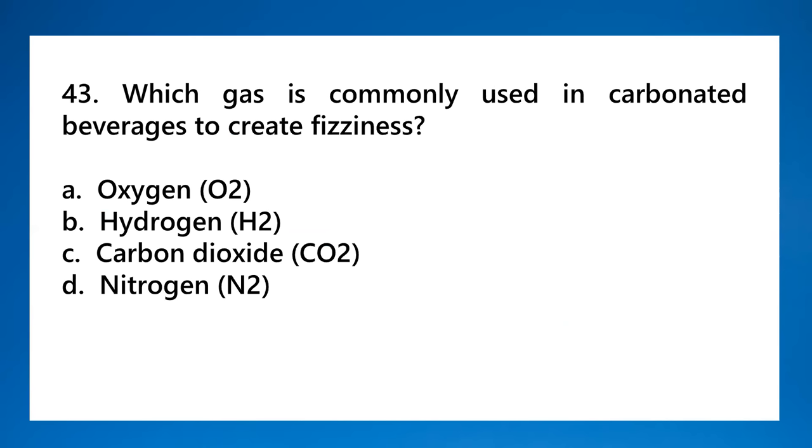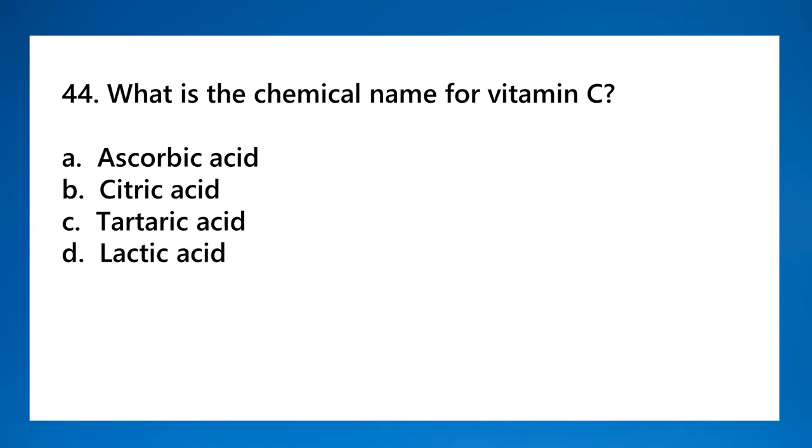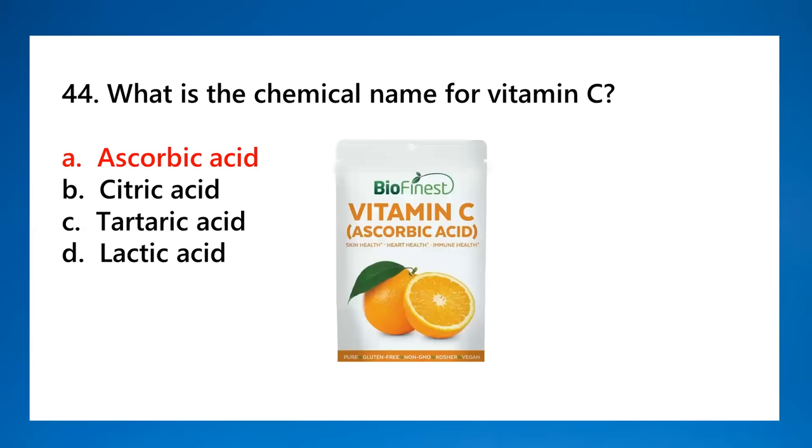You should be familiar with the periodic table. Noble gases include helium, neon, argon. Neon is a noble gas. Noble gases are inert gases, they're not reactive, not highly reactive. Highly reactive elements are group 1 and group 2. Number forty-three: which gas is commonly used in carbonated beverages to create fizziness? That is carbon dioxide. When we open carbonated beverages, the fizzing sound is carbon dioxide escaping. Number forty-four: what is the chemical name for vitamin C? That's ascorbic acid.